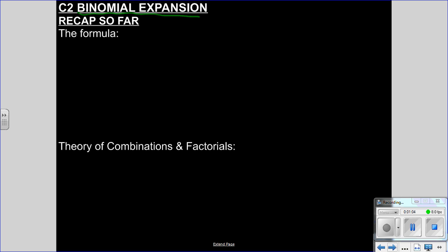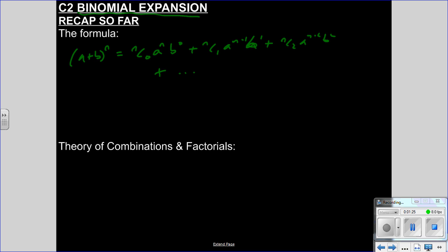The formula: if you have (a + b) to the power of n, this is n choose 0 times a^n times b^0, plus n choose 1 times a^(n-1) times b^1, plus n choose 2 times a^(n-2) times b^2, plus — in general — n choose r times a^(n-r) times b^r. And as you know it's symmetrical, so the last term will be nCn times a^0 times b^n.